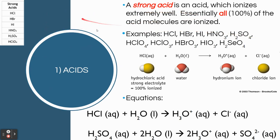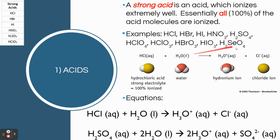There are a couple of other strong acids not included in that main list: iodic acid, selenic acid, and bromic acid. Those are also considered strong acids. They're not as common as the six listed, but they are still strong acids and would be good to know.